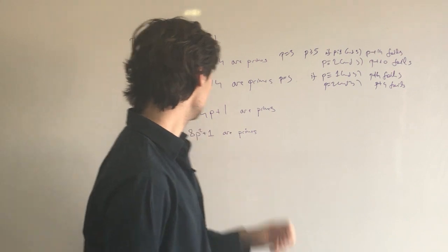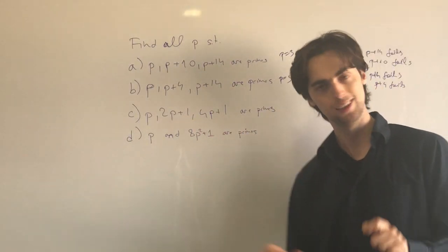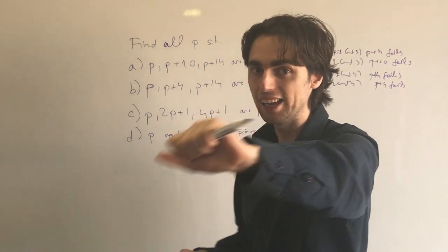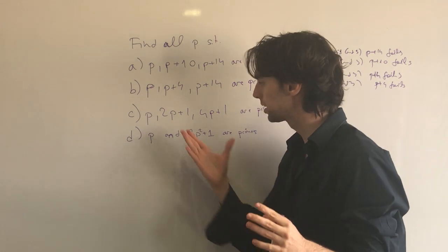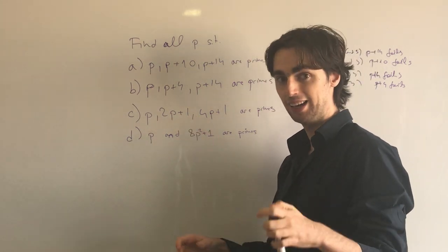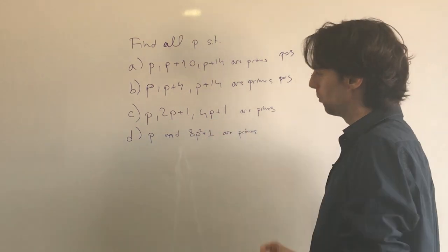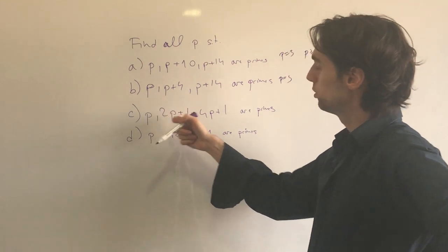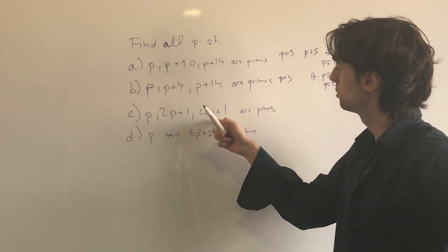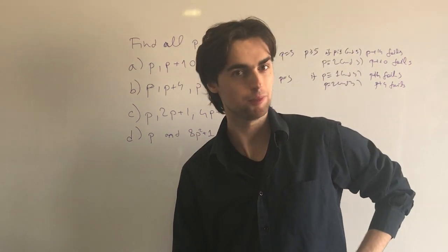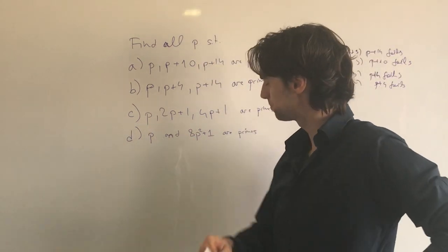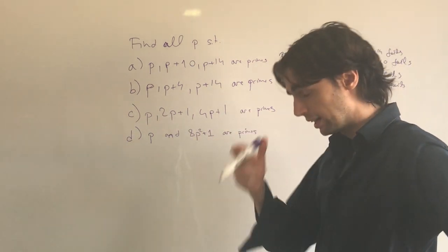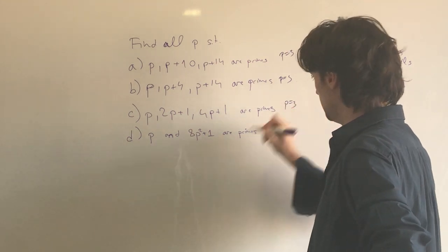Now let's move on to part C: P, 2P plus 1, and 4P plus 1 all prime. I invite you to take five to ten minutes to figure this one out. When we put in P equals 2, we get 2, 5, and 9 — but 9 is divisible by 3, doesn't work. When we put in P equals 3, we get 3, 7, and 13 — so P equals 3 works.